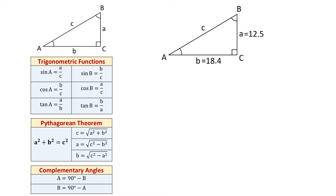The last two formulas are used to find angles A and B. We know that in any triangle, the sum of all three angles equals 180 degrees. If this angle is 90 degrees, this means that the sum of these two angles is also 90 degrees. Then, if we are given angle B, we can find angle A by subtracting angle B from 90 degrees. And if we are given angle A, we can find angle B by subtracting angle A from 90 degrees.